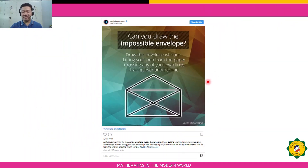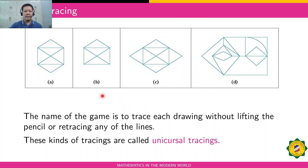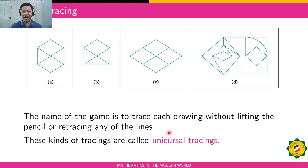Here is a similar problem in graph theory — actually uploaded on social media. Can you draw the impossible envelope? The conditions are: drawing this envelope without lifting your pen from the paper, without crossing any of your own lines, and without tracing over another line. This game is known as Unicursal Tracing. The goal is to trace the drawing or figure without lifting your pen or retracing any of the lines — you must pass through each line only once. You may start at any point and trace the figure without lifting your pen.